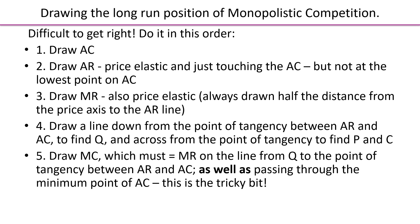Finally, draw the marginal cost curve, which must equal marginal revenue on the vertical line at the quantity produced — and remember that marginal cost must also pass through the minimum point of the average cost curve. That's the tricky part to add last. Practice makes perfect, so work through this order several times to get it right.